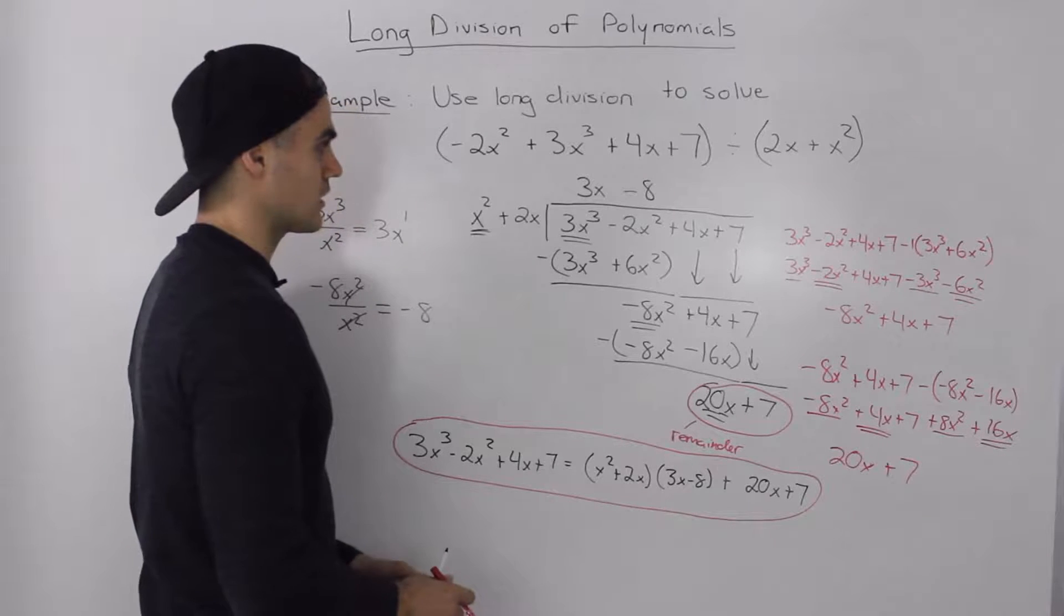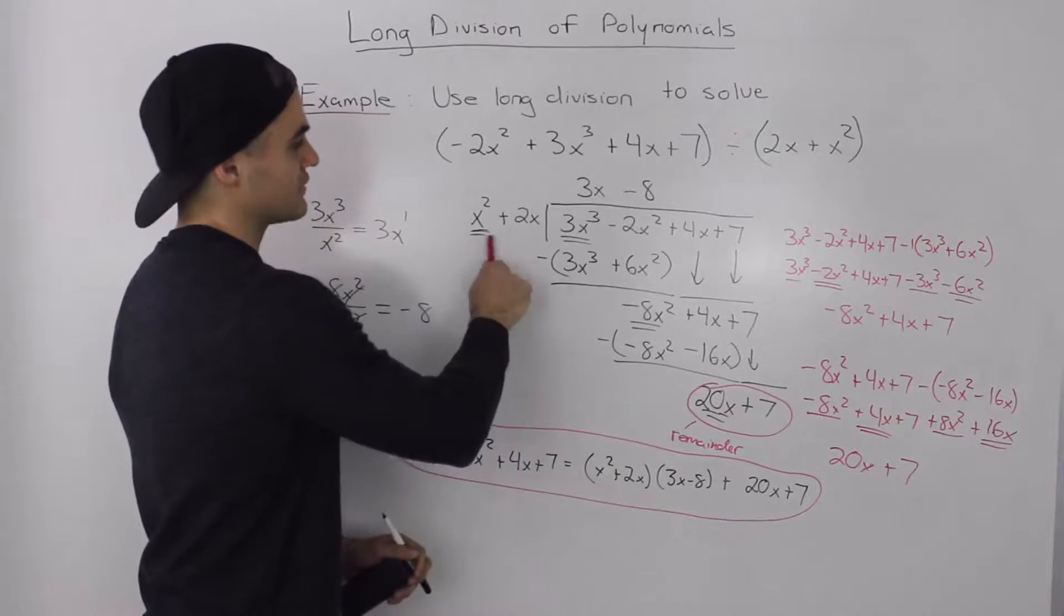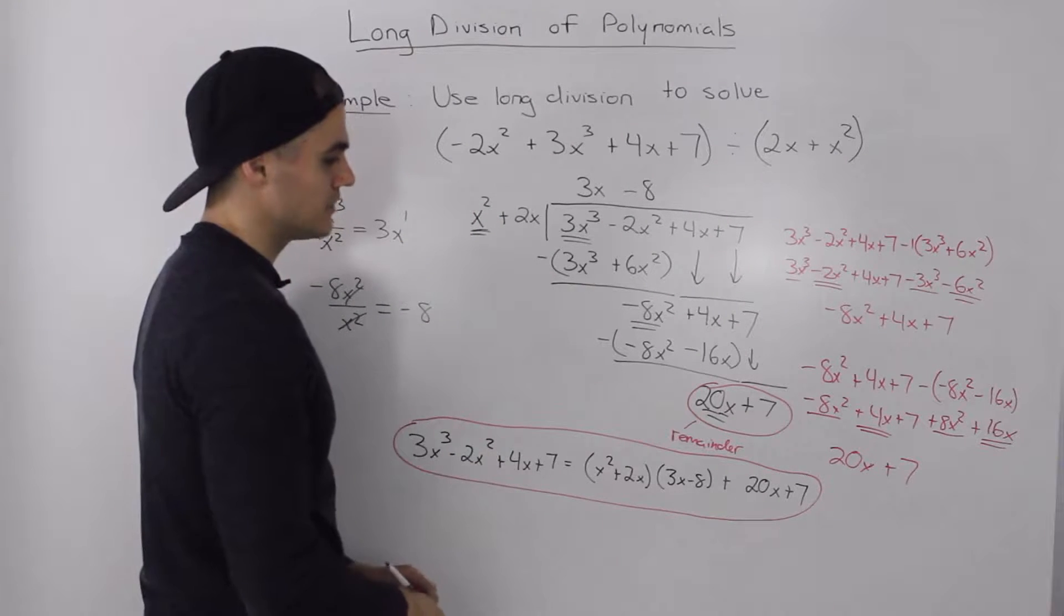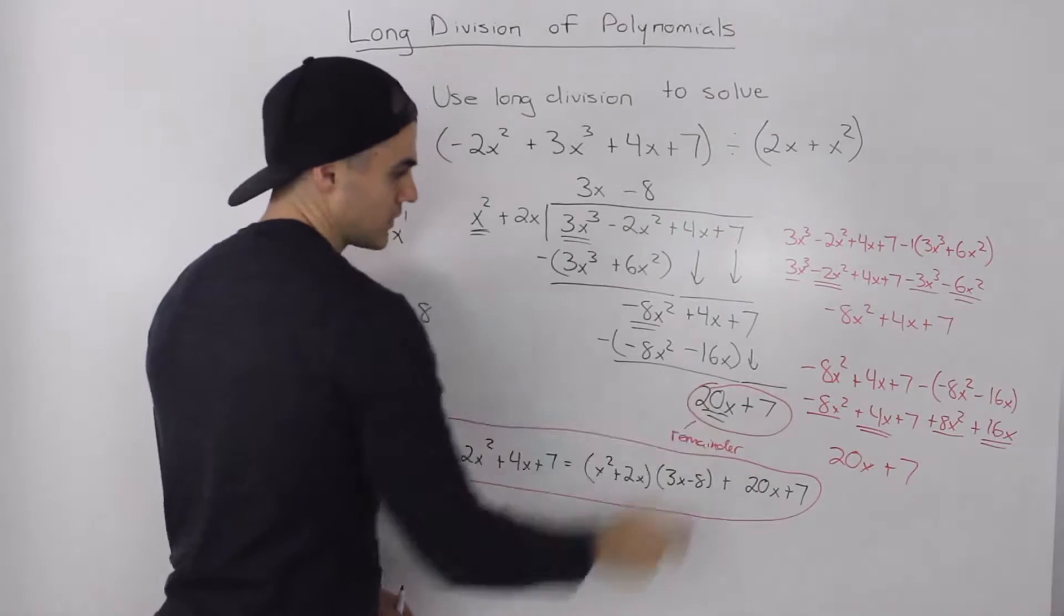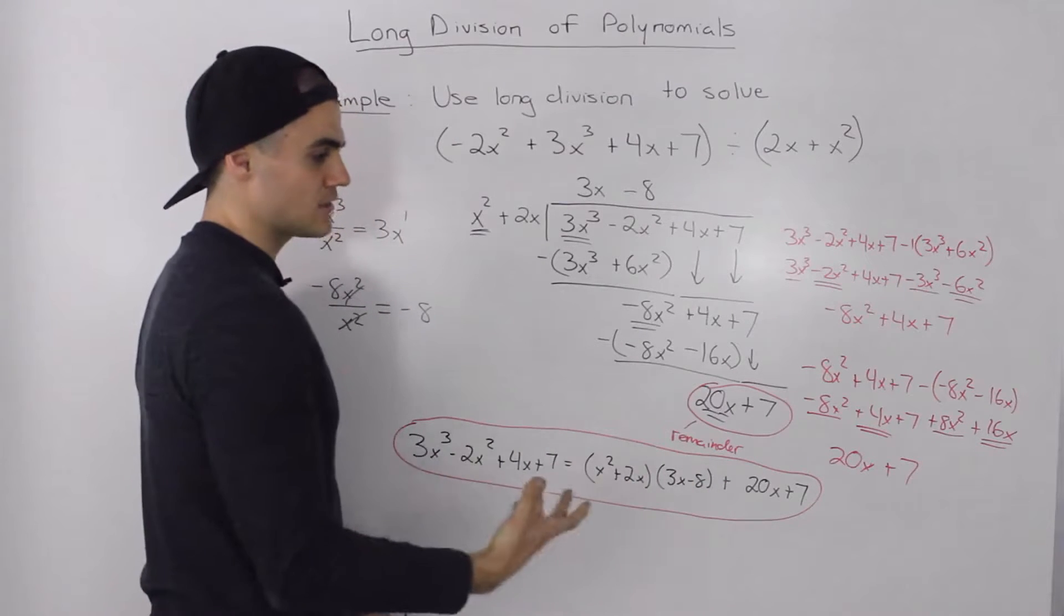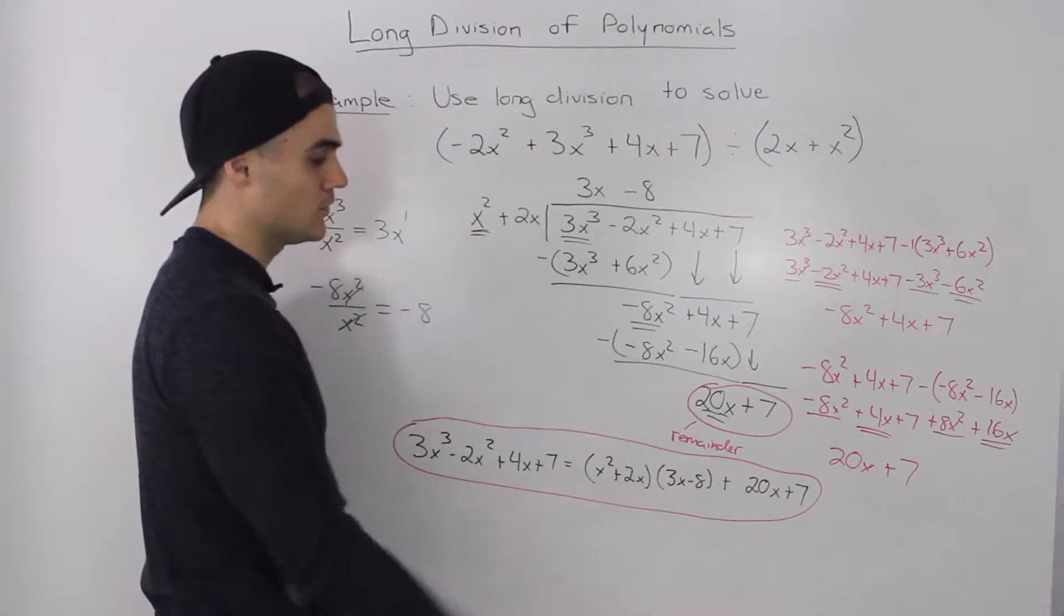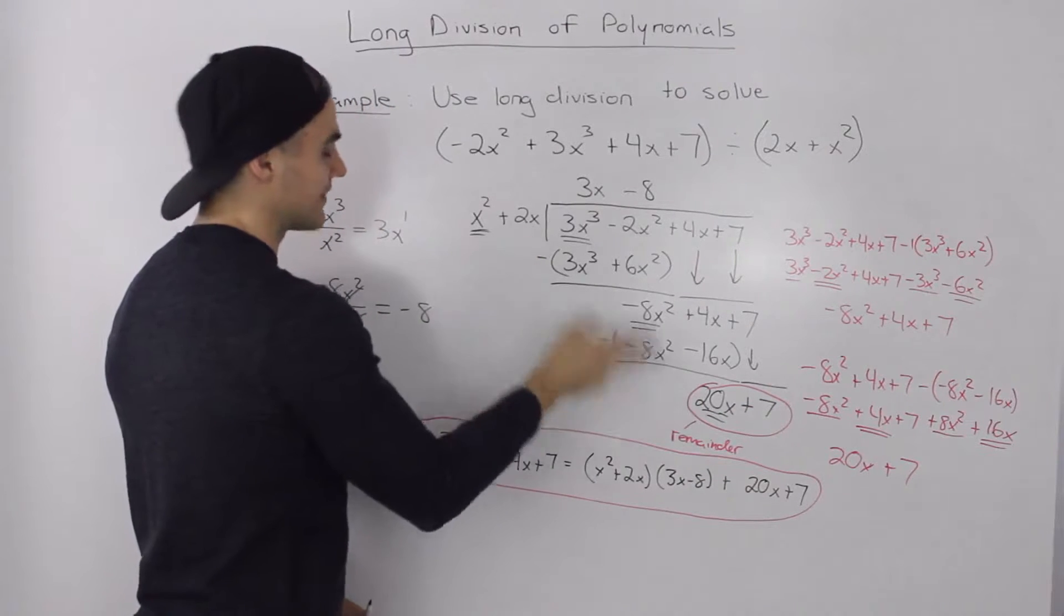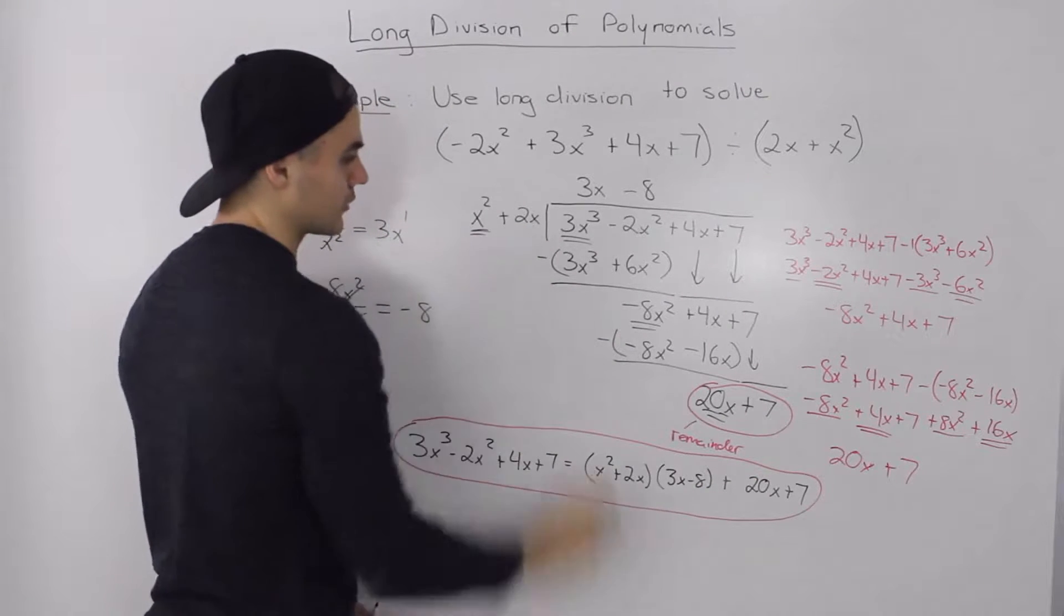Now the thing that was different about this example versus the previous examples that we did was that the divisor had a degree of 2. Usually the divisors in the previous example had a degree of 1. But it doesn't matter. The process is the same. The only difference is going to be this remainder that we get. If you notice, it wasn't a constant, it had a degree of 1. But it still holds to the point that we made in the long division overview video where the degree of the remainder always has to be less than the degree of the divisor. Okay? So the degree of the remainder has to be less than the degree of the divisor.